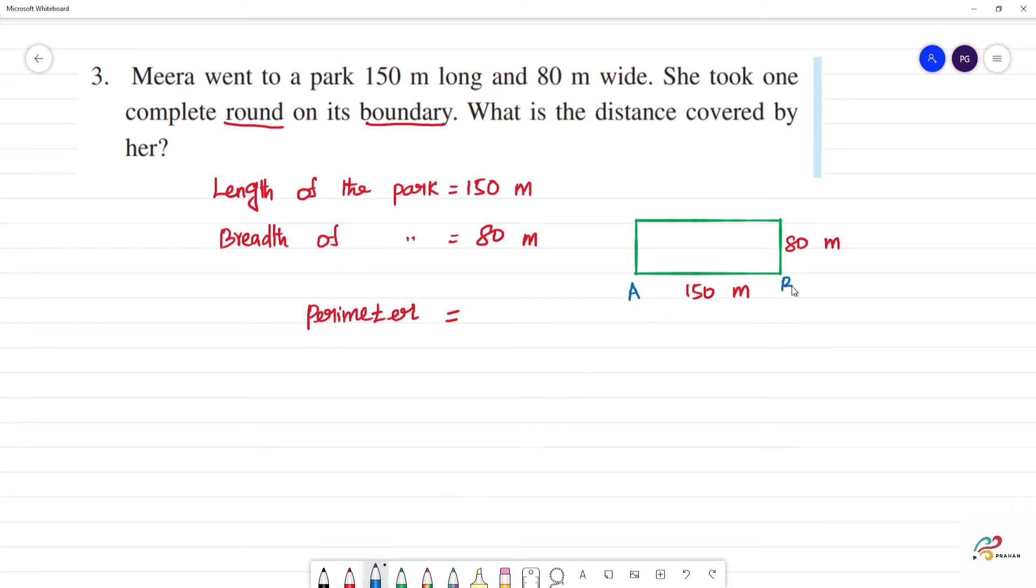Perimeter is equal to - let us take A, B, C, D. Then perimeter is AB plus BC plus CD plus DA. This is the perimeter. What is AB? AB is 150 plus 80 plus 150 plus 80.